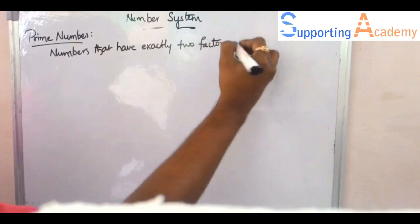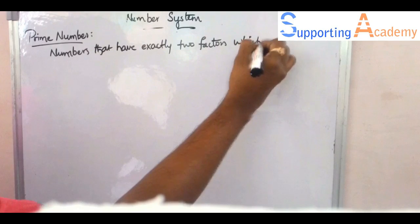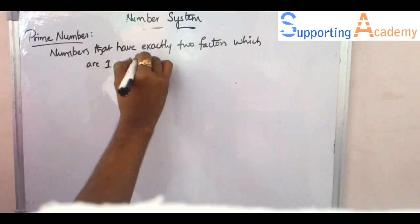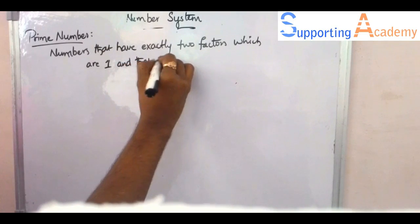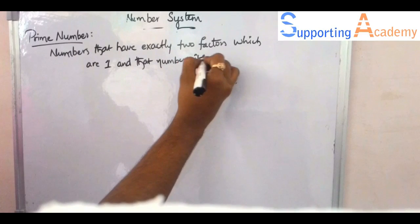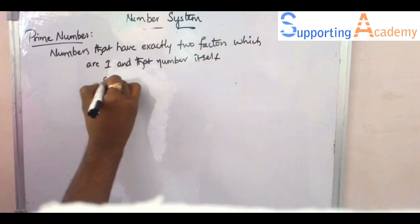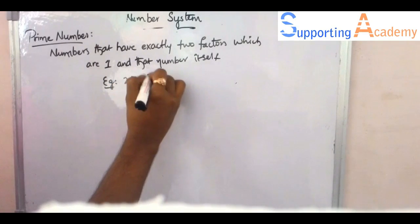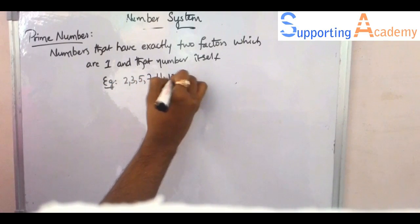And example like 2, 3, 5, 7, 11, 13, 17, 19, 23, 29, 31 and so on. And the most important point that you need to remember here is that the 2 is the one and only even prime number and the other numbers are odd numbers.